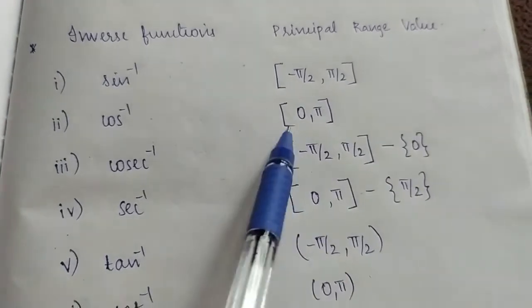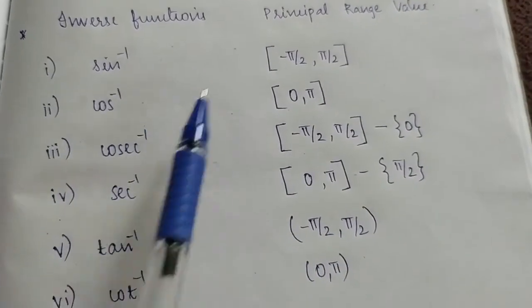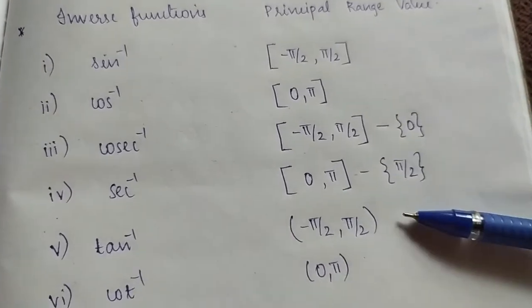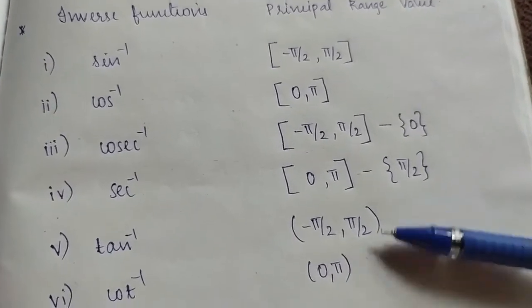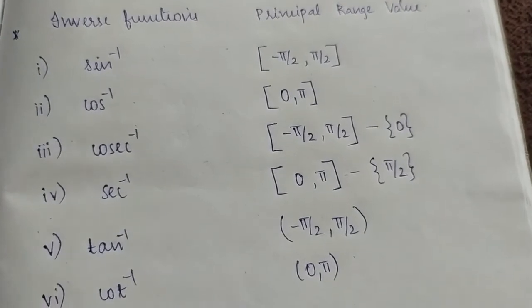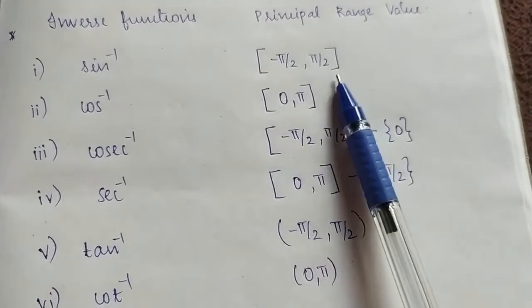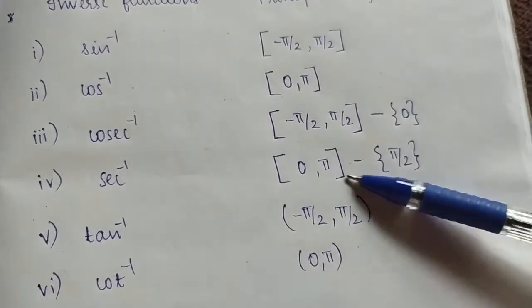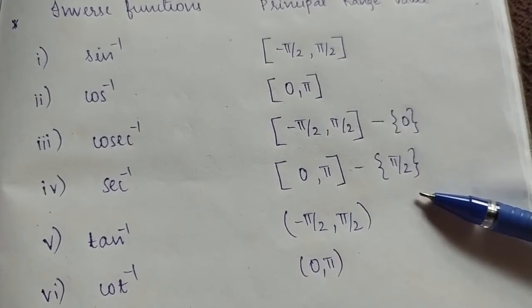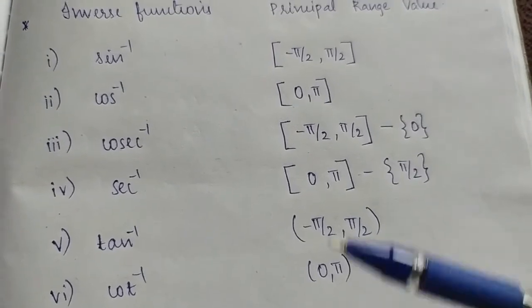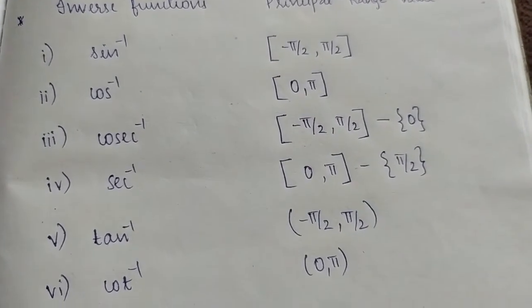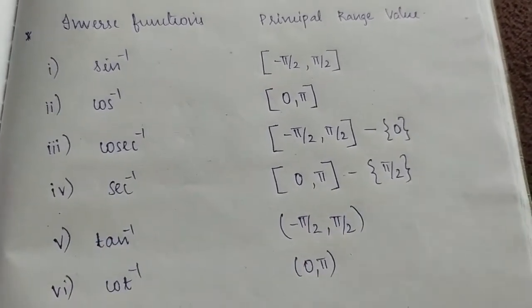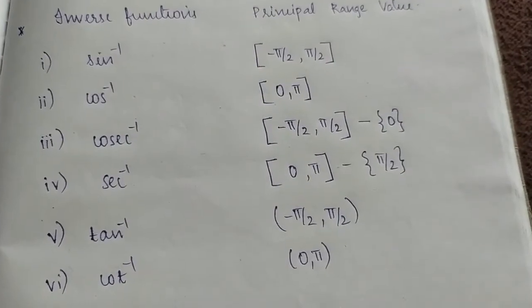There is a very important concept in inverse trigonometry — we will study the range. We study the principal value range so that inverse functions are well-defined. Sin inverse has a closed interval from −π/2 to π/2. Tan inverse uses an open interval. Cos inverse range excludes 0 and π/2 for certain functions.